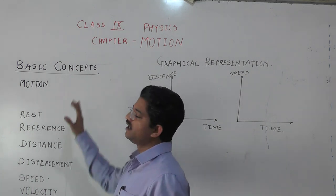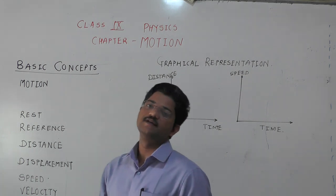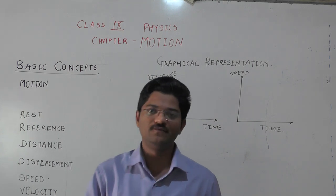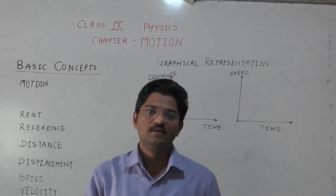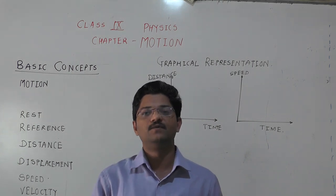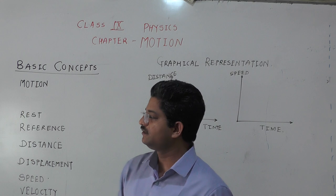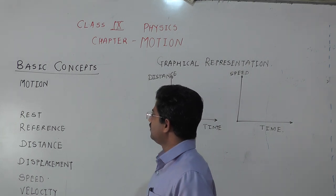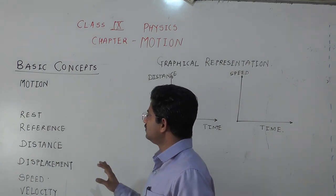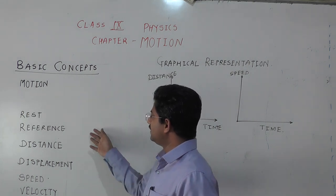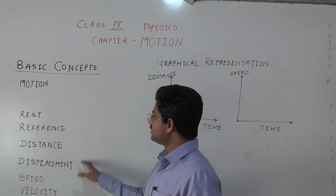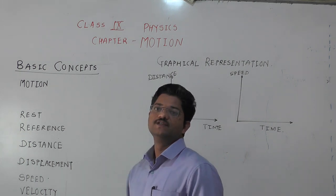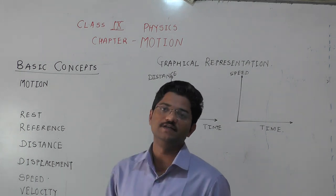Motion is of two kinds we are going to see here: uniform motion and non-uniform motion. To get the concept of uniform motion, we have to understand the basic parameters which are distance, displacement, speed, and velocity.